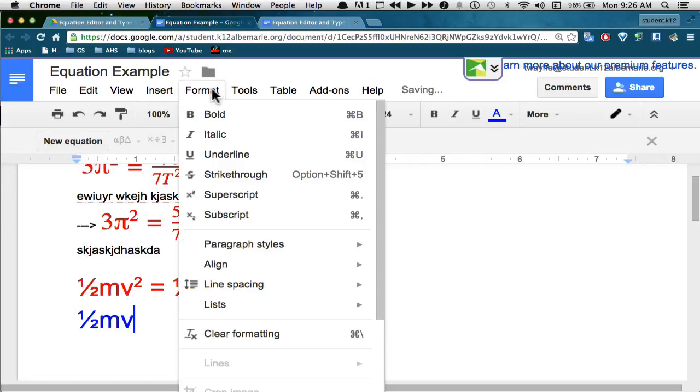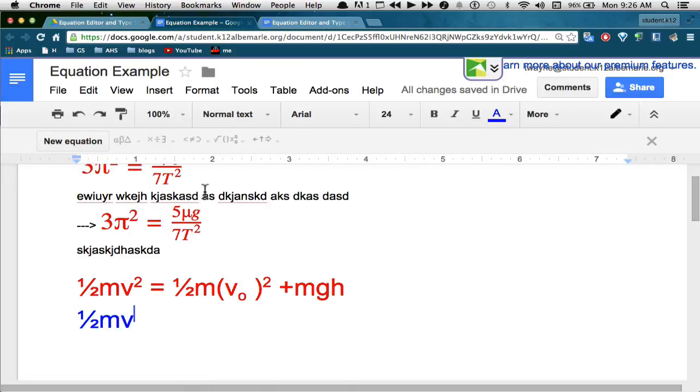And then superscript, I'll go to format and superscript. And then I'll use superscript again. Turn it off. A space equals space. Another one half, 1 slash 2, space.